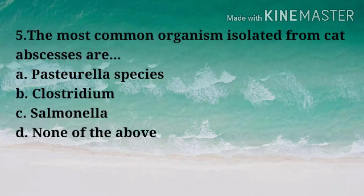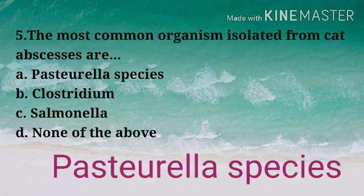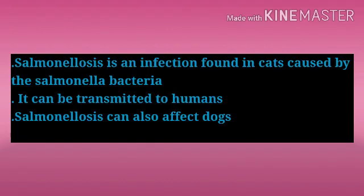Question: The most common organism isolated from cat abscesses is — Options: A) Pasteurella species, B) Clostridium, C) Salmonella, D) None of the above. Correct answer: Option A — Pasteurella species. The most common organism isolated from cat abscesses is Pasteurella species.